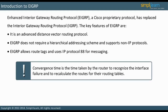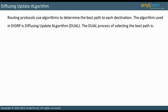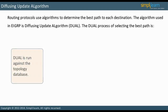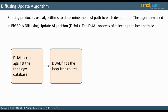Let us now look at the algorithm used to determine the best path: the Diffusing Update Algorithm. All routing protocols use some type of algorithm to determine the best path to each destination. What is considered the best path depends on the metric used as well as the algorithm. The algorithm used in EIGRP is the Diffusing Update Algorithm, DUAL, developed by Dijkstra. DUAL is run against the topology database to determine the best path and to rank backups for the path. DUAL finds loop-free routes.